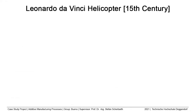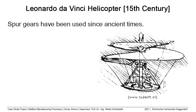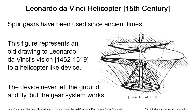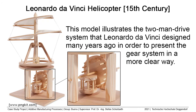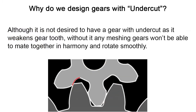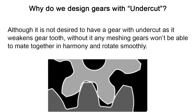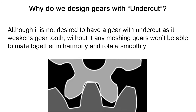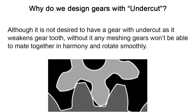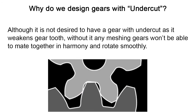Spur gears have been used since ancient times. This figure shows an illustration of the two-man drive system that Leonardo da Vinci designed to power his vision of a helicopter-like device. The device never flew but the gear system works. Today we are going to talk about a complex phenomenon in spur gears that not only takes place when certain conditions are not met, but also that designers do on purpose in order to keep a smooth path between mating gears — and that is called undercut.